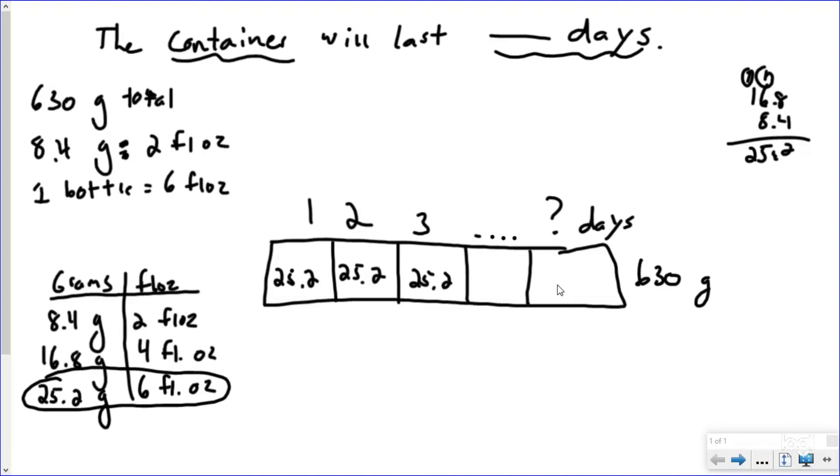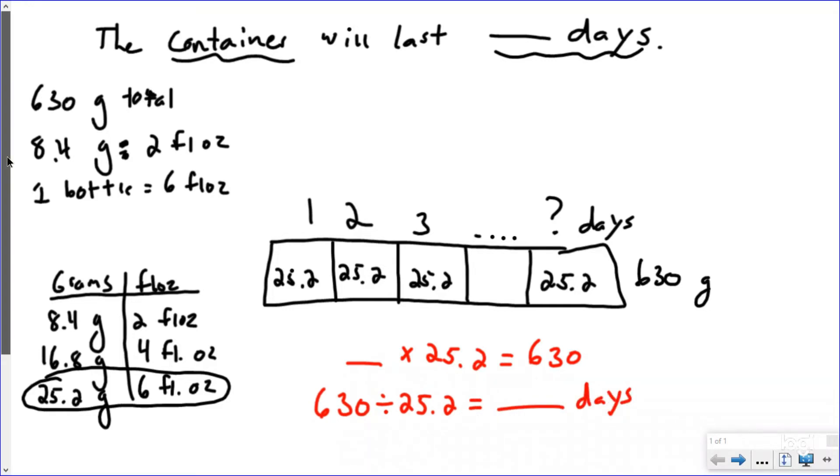And I don't want to continue to do that forever because it might take me a while. And so I have my tape diagram set up here. So now I have my tape diagram set up. If you don't know how to do tape diagrams, check out our other videos. And so I know what my equation is saying. I have blank groups of 25.2 is going to equal 630. So I'm trying to figure out how many days of 25.2 can I make out of 630 grams. So this is really a multiplication equation looking for my missing factor, which means I'm going to use my fact family knowledge to rewrite this as 630 divided by 25.2 equals blank days.